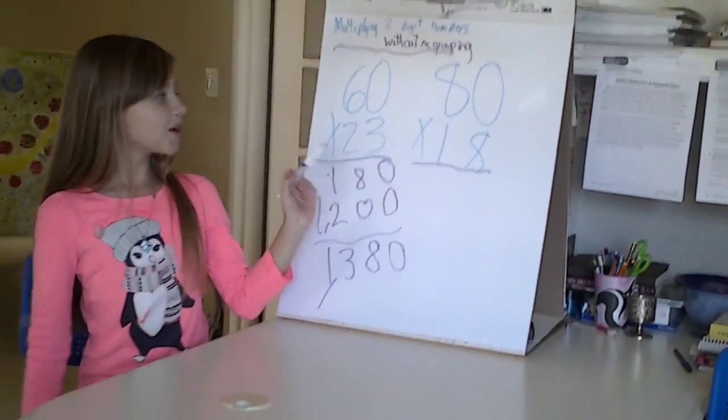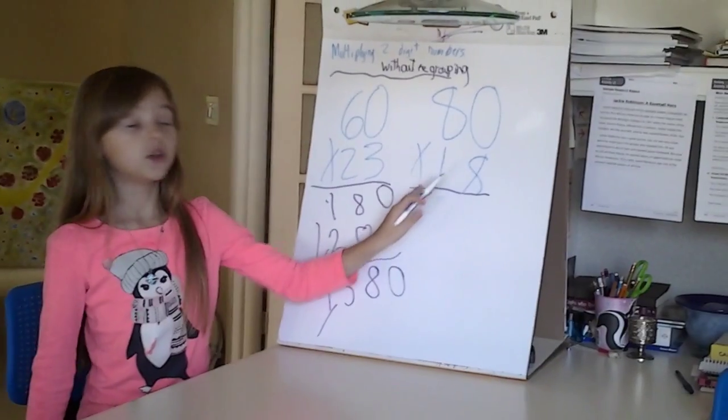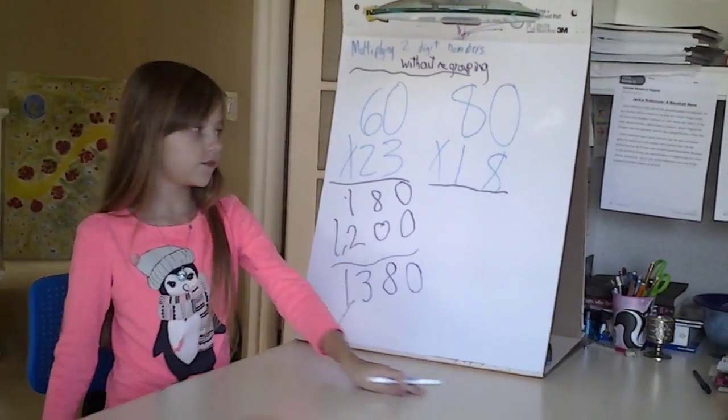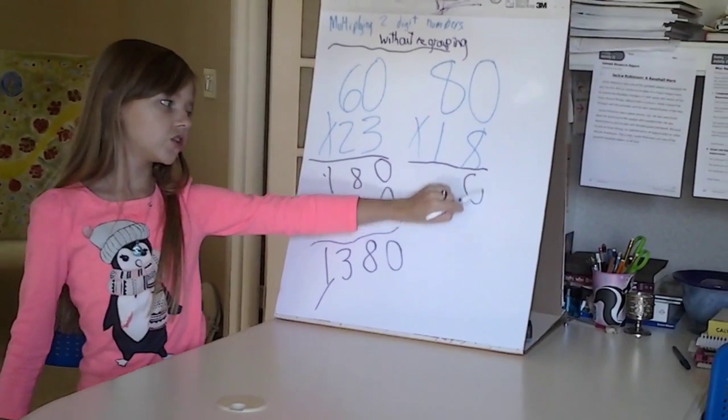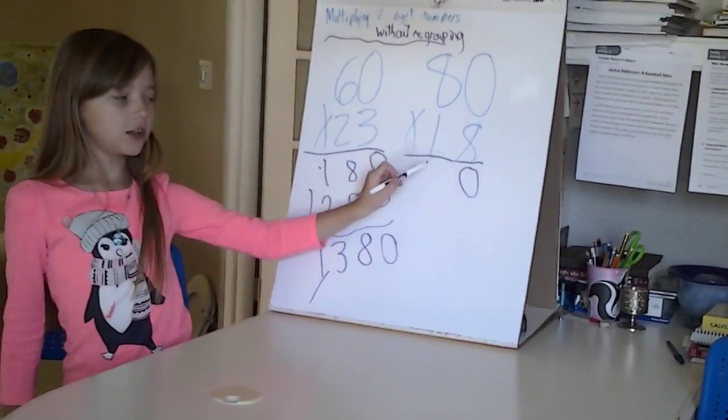And you can also do 80 times 18. You can do this in any kind of numbers. First, you do the 0 times the 8, which is 0. Then 8 times 8, 64.